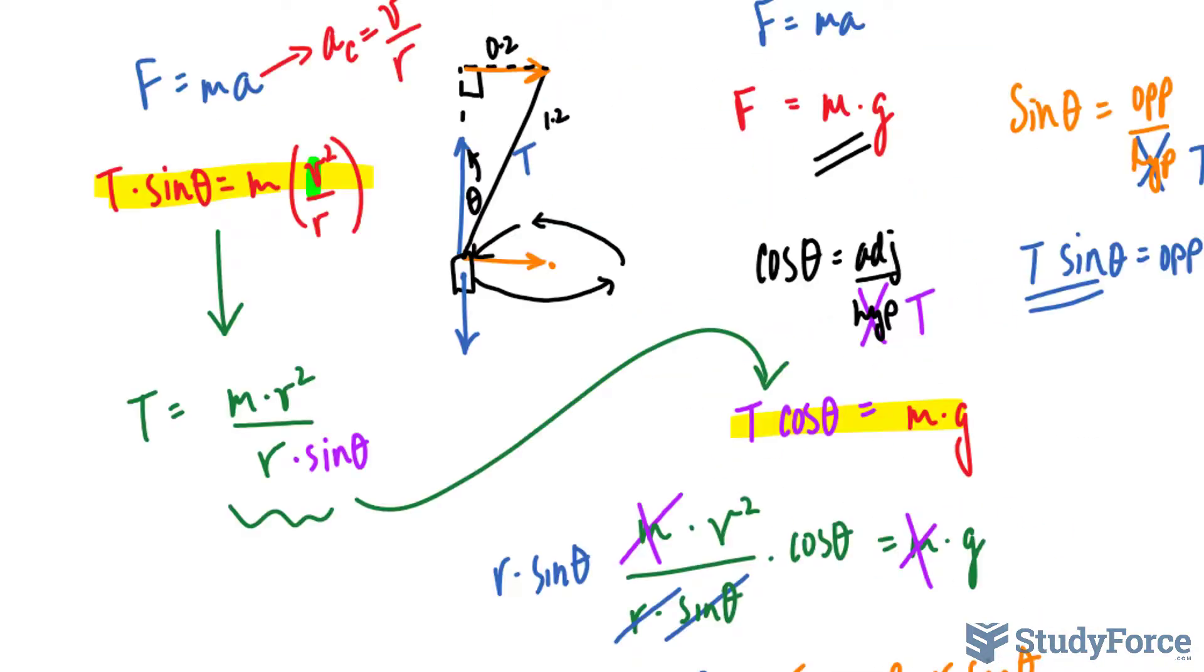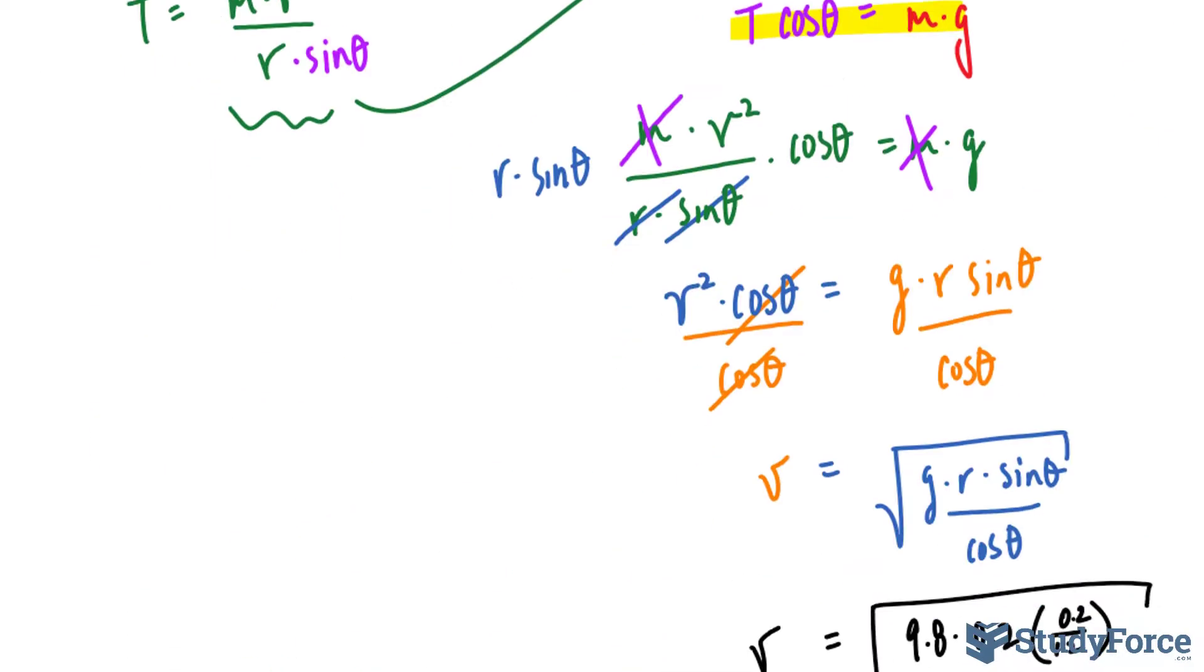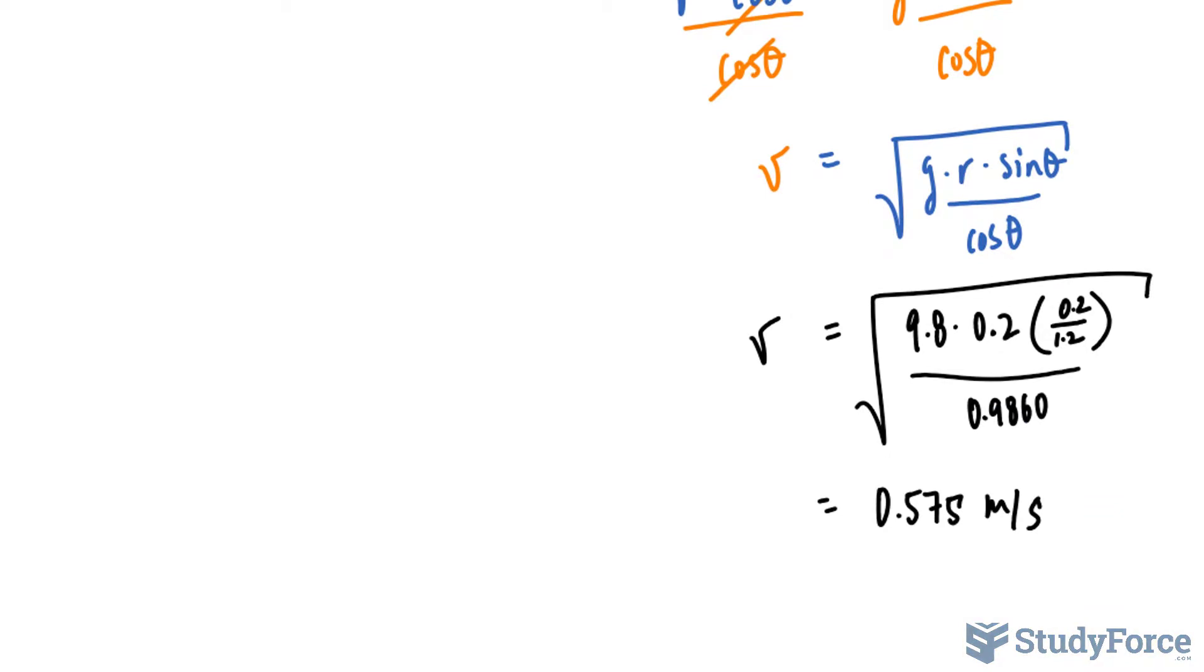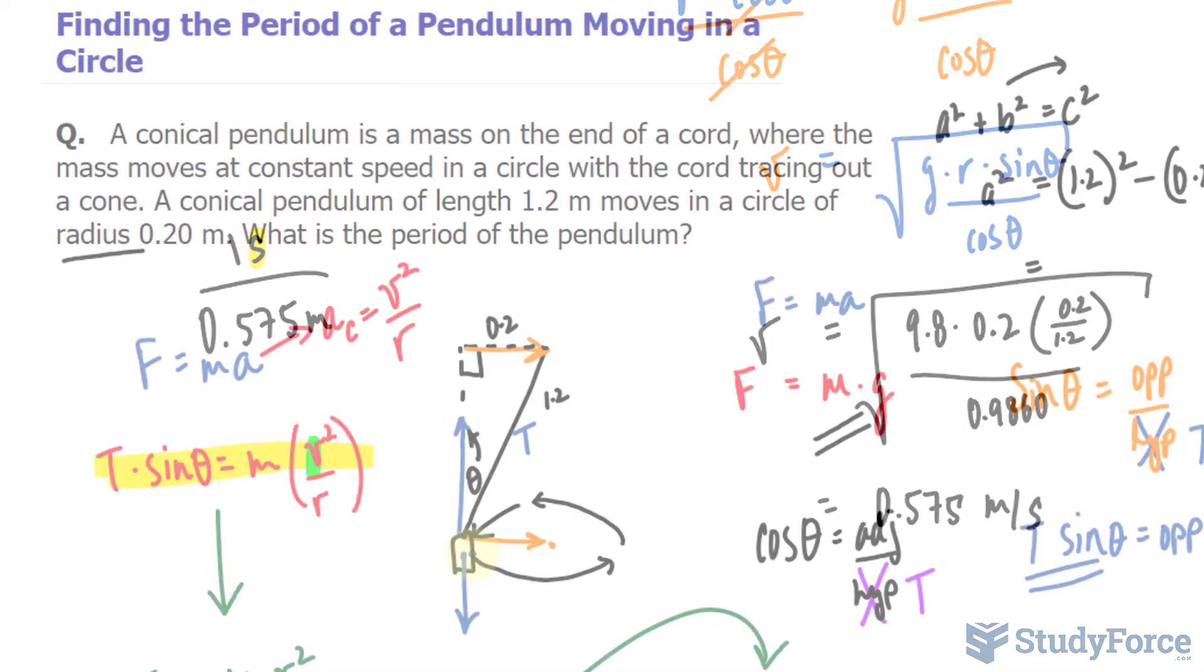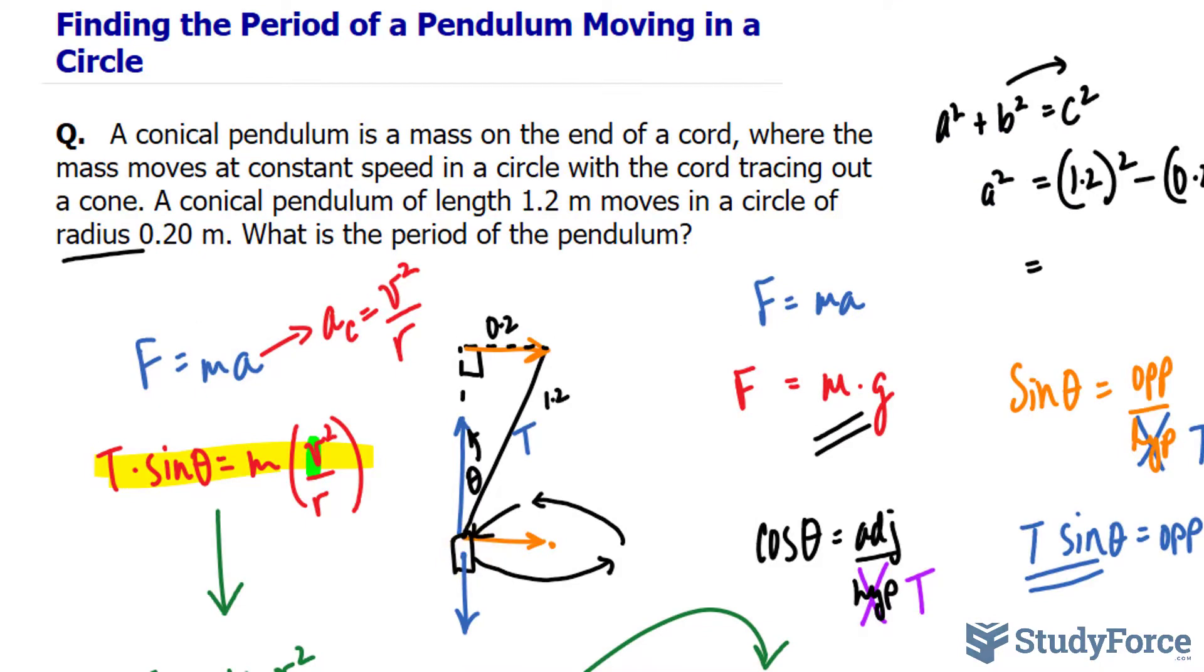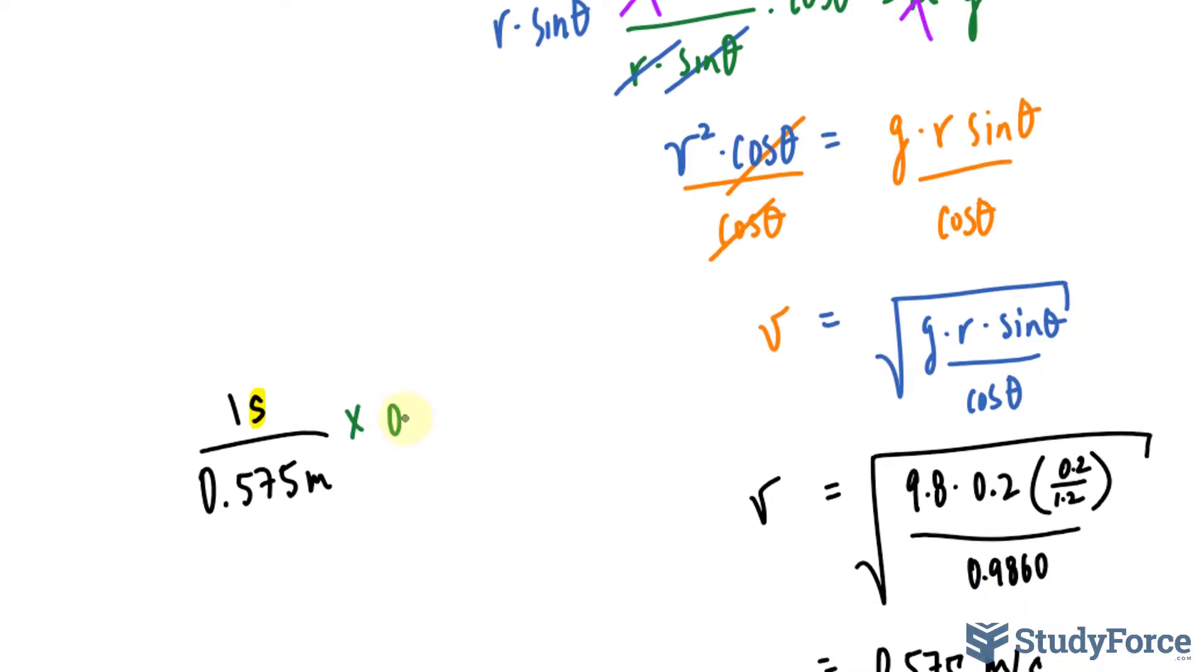So we have the velocity. The question is asking for the period. So they're asking how long it takes for every cycle to occur. And what we can do to do that is take 0.575 meters and write down one second at the top. Because we want our final units to be in time, as seconds.